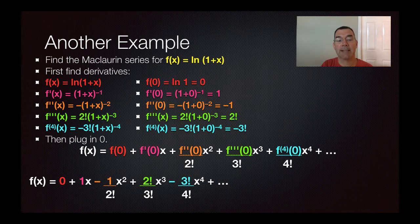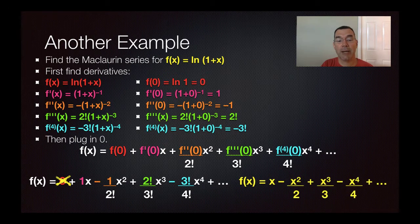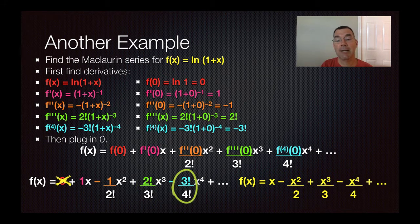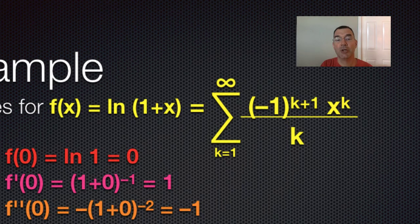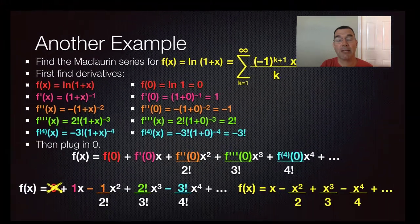The zero doesn't need to be written, but everything else does. Notice how the factorials cancel out — for example, 2 factorial over 3 factorial leaves just a 3 in the bottom, and 3 factorial over 4 factorial leaves just a 4 in the bottom. So you simplify each term to write it as a nice sum. In this case, k goes from 1 to infinity of negative one to the k plus one times x to the k, all over k. There's no factorial this time because the factorials on top and bottom simplified to a single number.